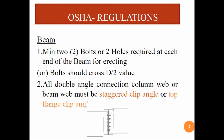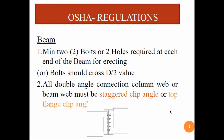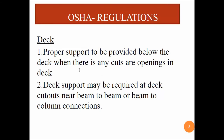For beams, a minimum of two bolts or two holes are required at each end of the beam for erection, and the bolt should cross the prescribed value. All double angle connections — column web or beam web — must use a staggered clip or top flange angle connection. The diagram shows an example of a staggered clip angle connection where the angles are in different directions.